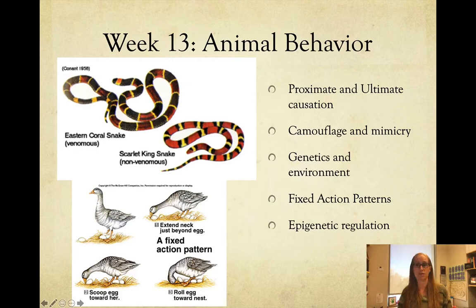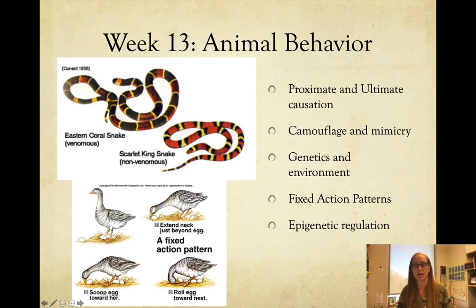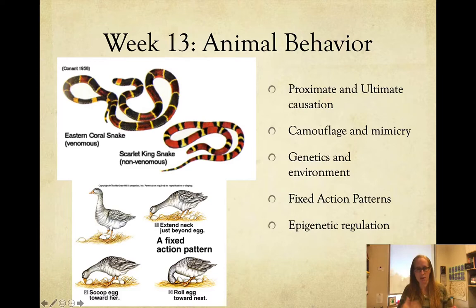Week thirteen, done at home over Thanksgiving, looked at animal behavior. We examined proximate versus ultimate causation — proximate being the mechanism inside the organism making it do what it does, and ultimate being some evolutionary advantage. We looked at genetic versus environmental influences, fixed action patterns, and epigenetic influences that control when genes turn on and off, as well as learned behaviors.